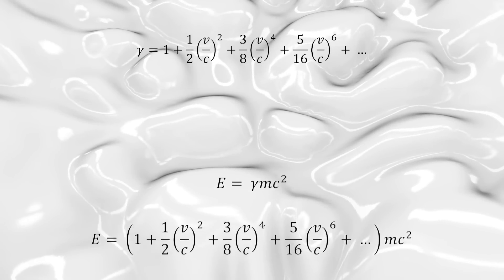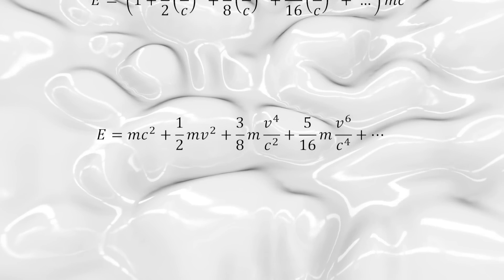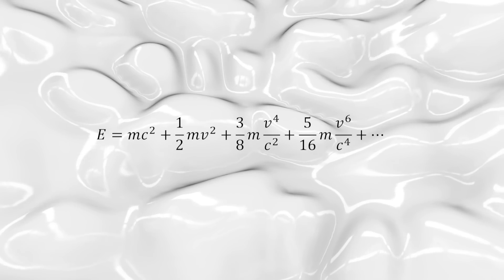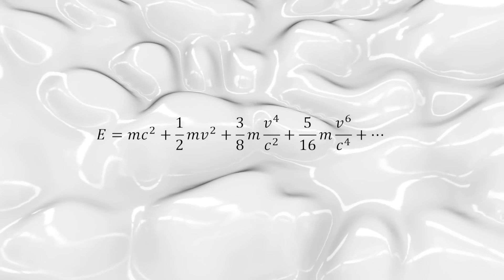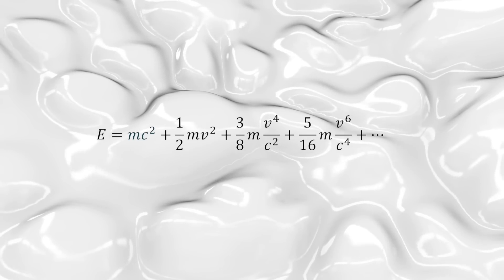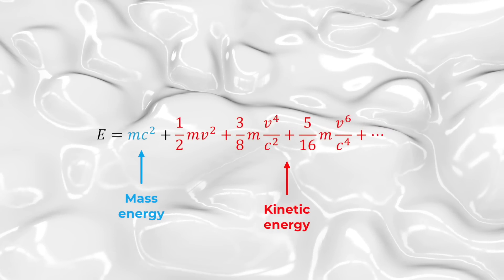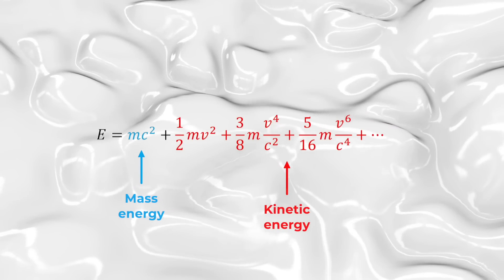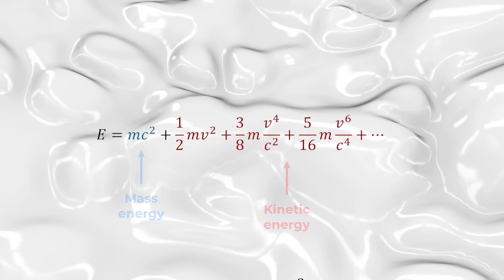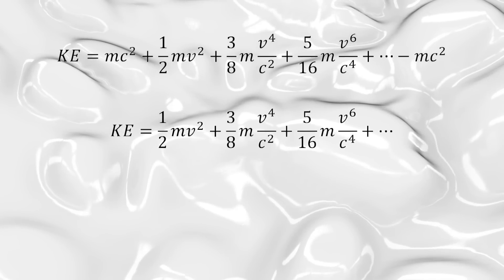Now remember that gamma times mc squared is the total energy. So we multiply this series of terms with the mc squared and we get this expression for energy, which is mc squared plus one half mv squared plus three eighths mv to the fourth divided by c squared and so on. Remember that, in relativity, energy is the rest mass energy plus the kinetic energy and that's what we see here. The mc squared is the rest mass energy and the rest is the kinetic energy. Thus, to find the kinetic energy, we subtract off the mc squared and we're left with just kinetic energy. And as we expected, it starts out with the one half mv squared and it has some other terms.